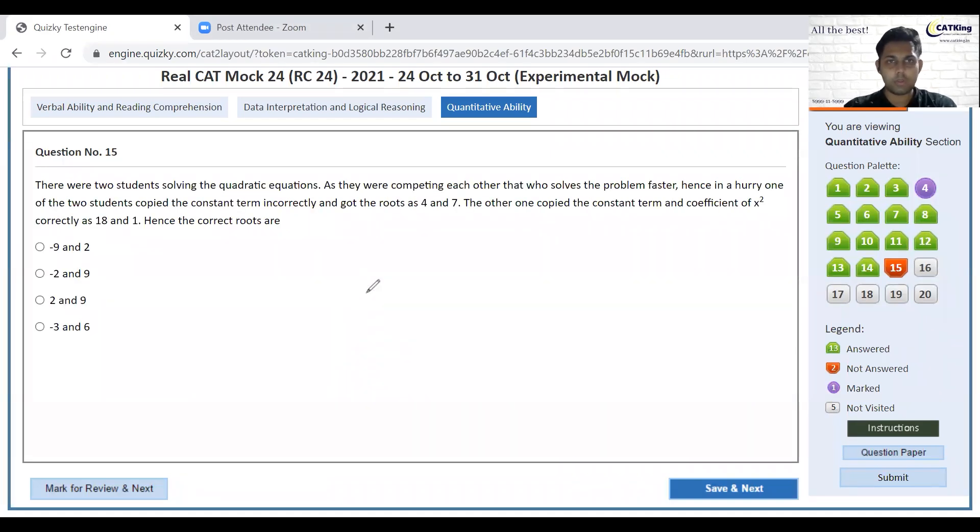Let's see. Solving quadratic equations. Constant term incorrectly, constant incorrectly and got the roots as 4 and 7, 18 and 1. 4 and 7 is sum of roots, so I will get x square minus 11x plus 18. Sum of roots. Correct roots. X square minus 9x minus 2x plus 18, so x equals 9 or 2. 9, 10, 11, 7, 4, 11, perfectly fine.